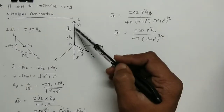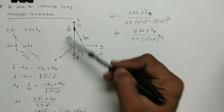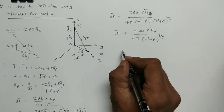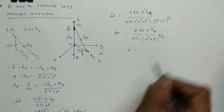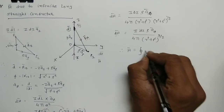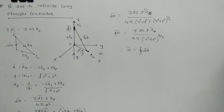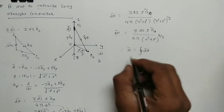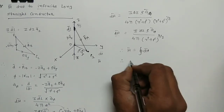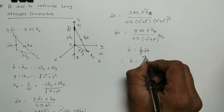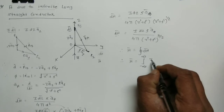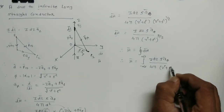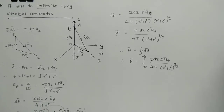That is the magnetic field intensity dH̄ at point P2 due to the differential current element dL̄. Now to find H̄ due to the whole conductor, I take the integral: H̄ = ∫dH̄ with limits from -∞ to +∞, because it is an infinite long straight conductor. So H̄ = ∫(from -∞ to +∞) I·dZ·ρ·Âφ / [4π(Z² + ρ²)^(3/2)].